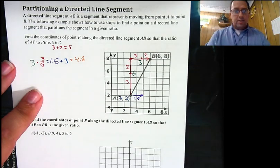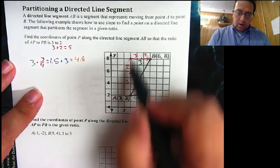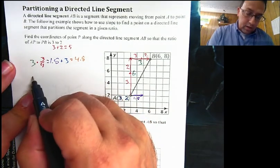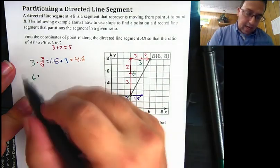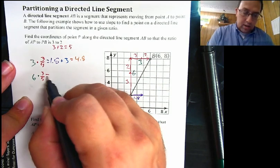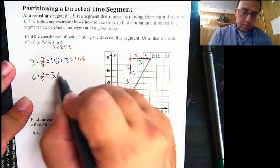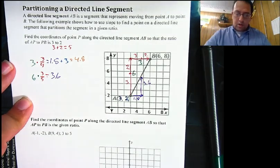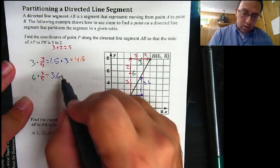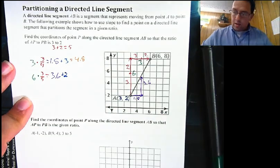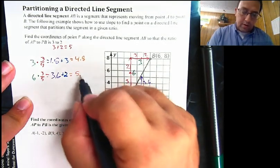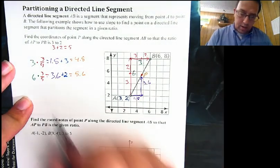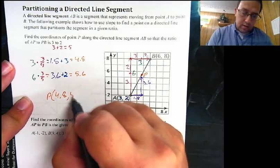Now we do the exact same thing with the y values. My rise is 6. I want to split that up into 5 parts and take 3 of them: 6 times 3 over 5 equals 3.6. That means I'm going to go up 3.6 units from where I started, which is y = 2. So 3.6 plus 2 equals 5.6. That means point P is at coordinates 4.8, 5.6.